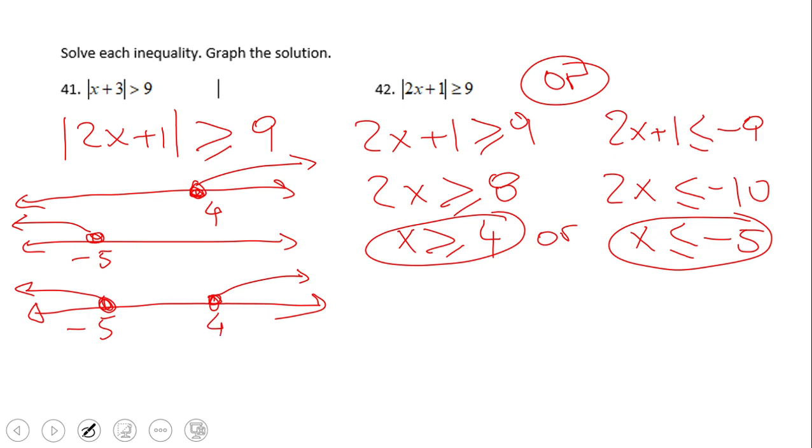We said that we have two rays, one going from negative 5 towards negative infinity, one from 4 to positive infinity. If you need interval notation, this is the first ray, the one that goes towards the left from negative 5. This is the way to show the ray that goes from 4 to positive infinity. And very important, remember that from set theories, this is the sign that shows us union.